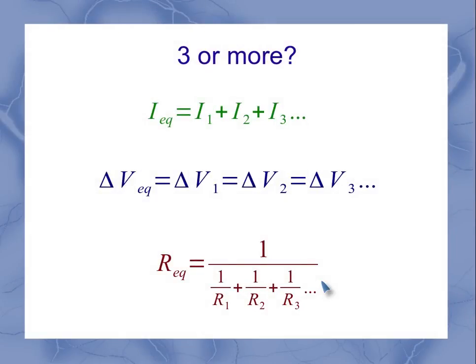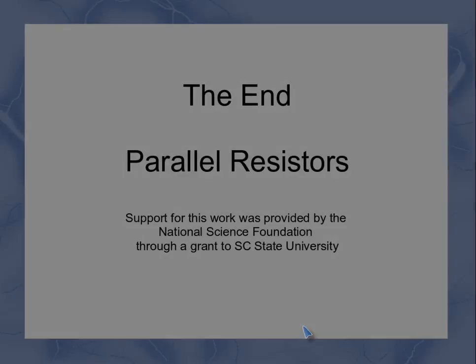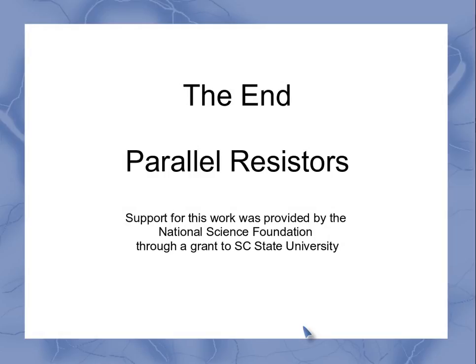If I had three or more resistors, the currents would still add up, my voltages would still be the same, and I would still work with the inverses. But now it's one over the sum of all the resistors' individual inverses added up. So those are our parallel resistor equations.